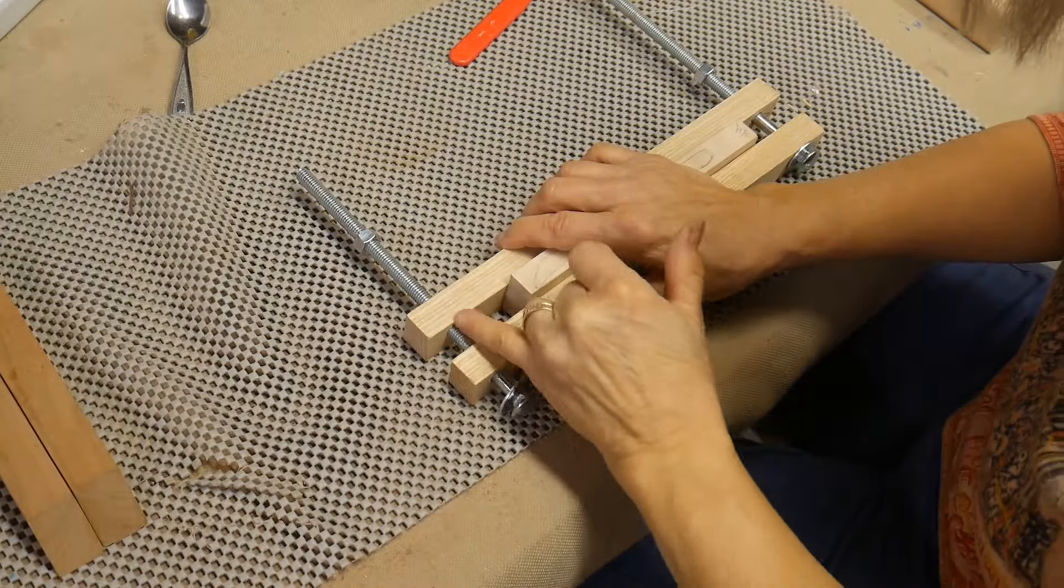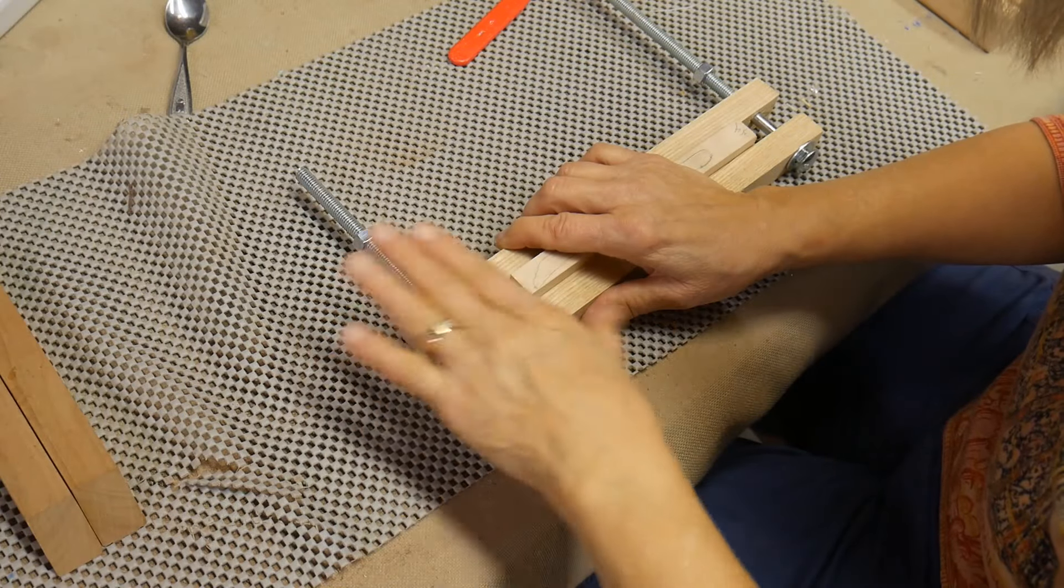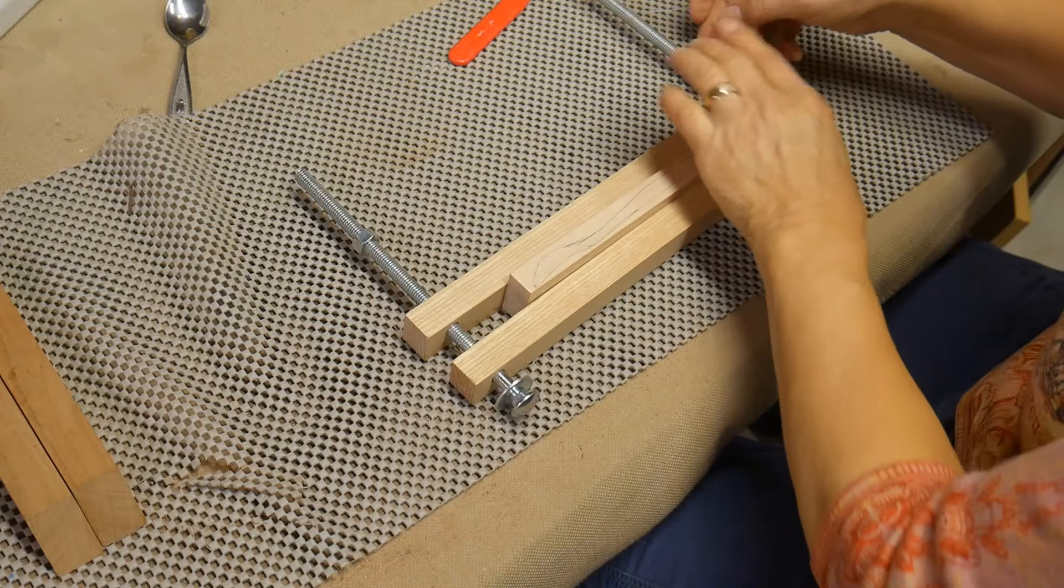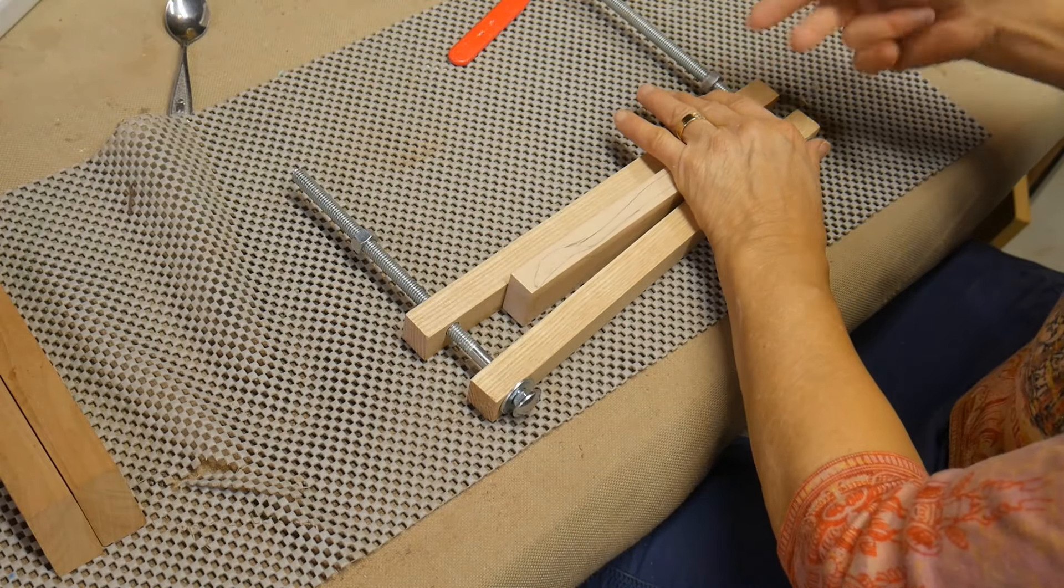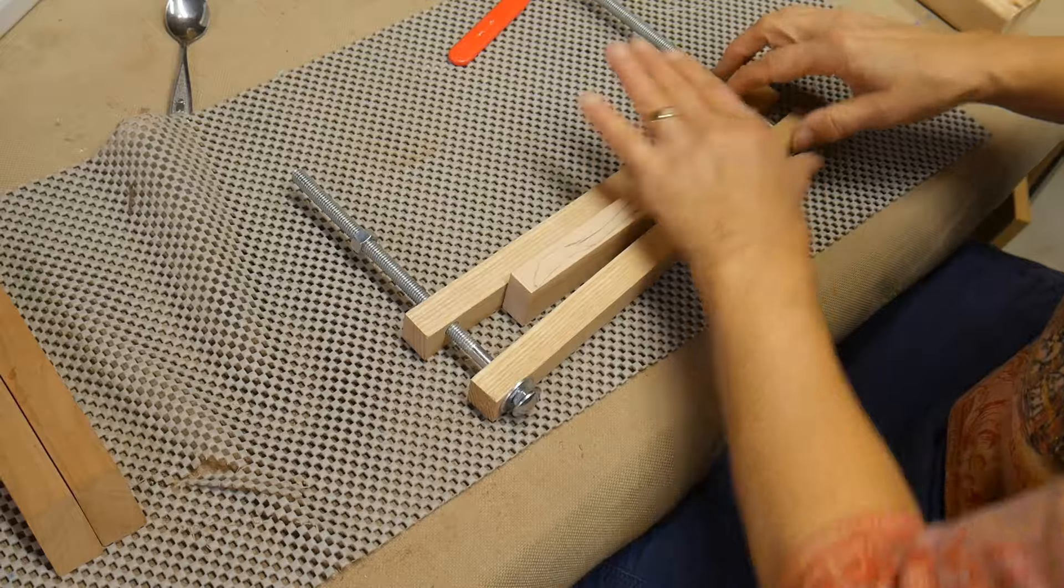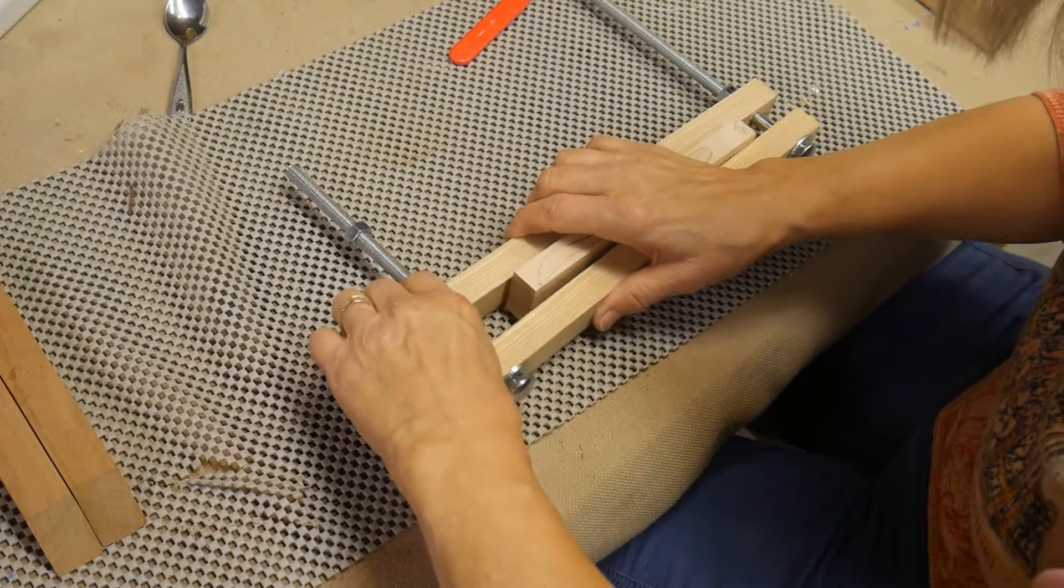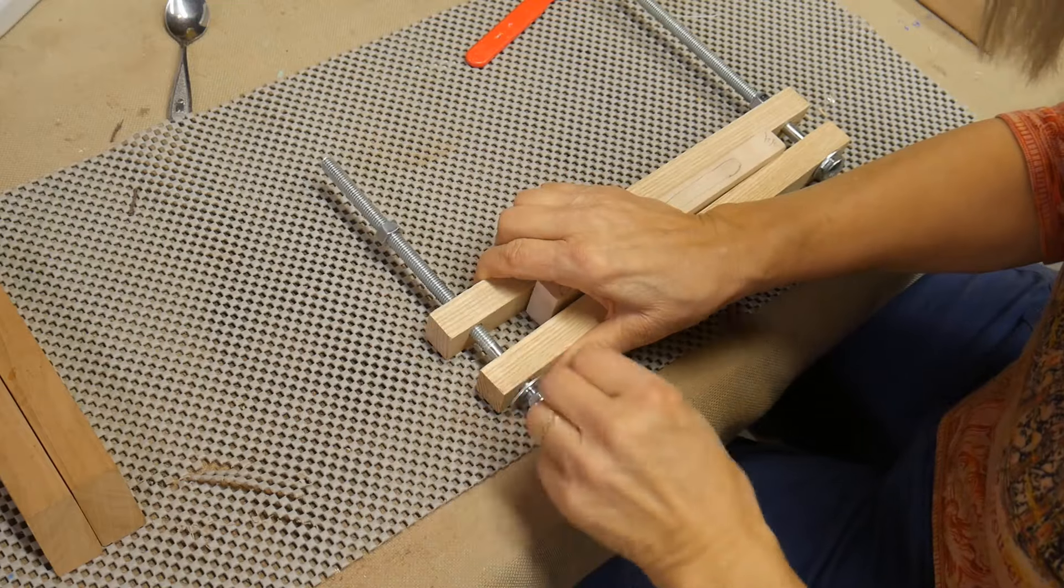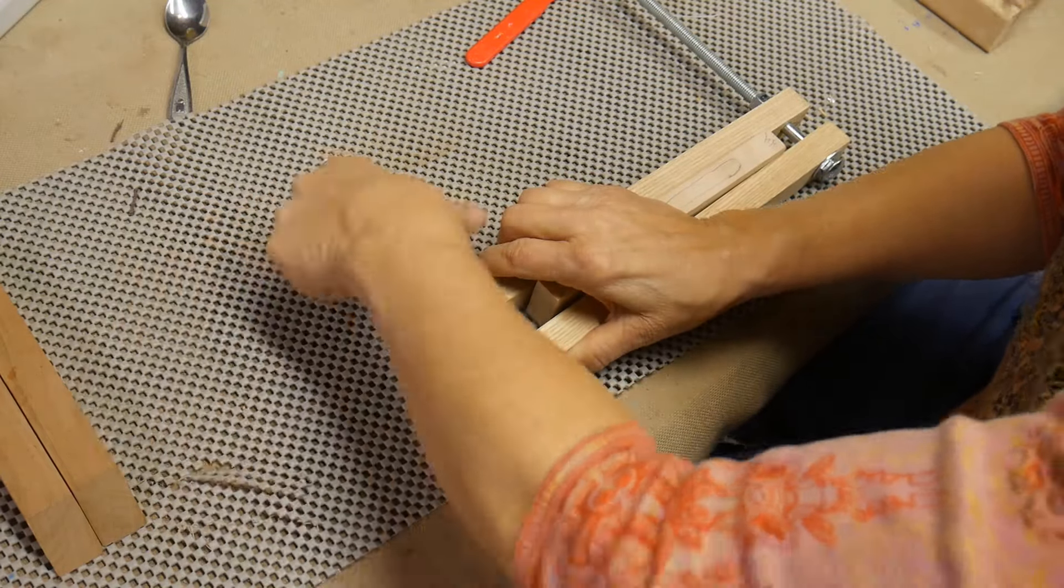I drilled these holes at the same time so they were even and flat on the bottom so they line up, and I think these will work out really nicely. Now, of course, you don't have to use this big of a bolt—you can use a smaller one. This is what I have, so this is what I'm using.